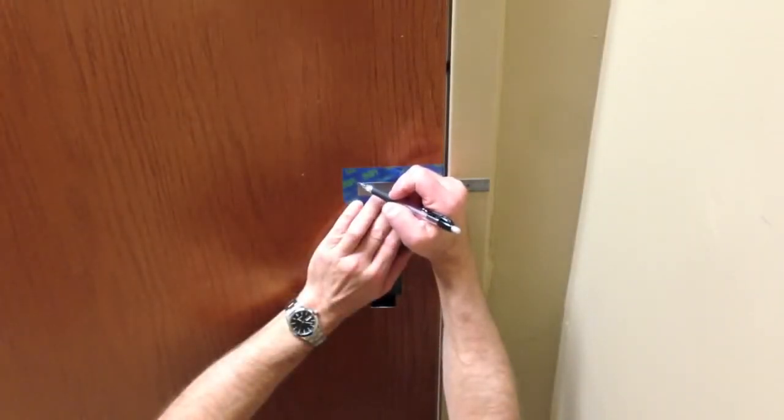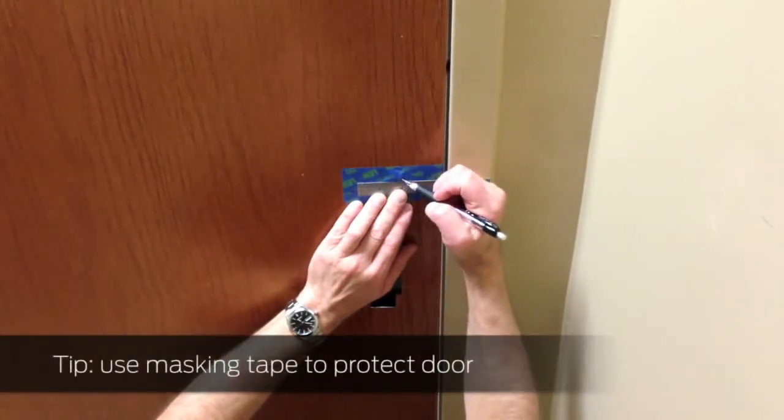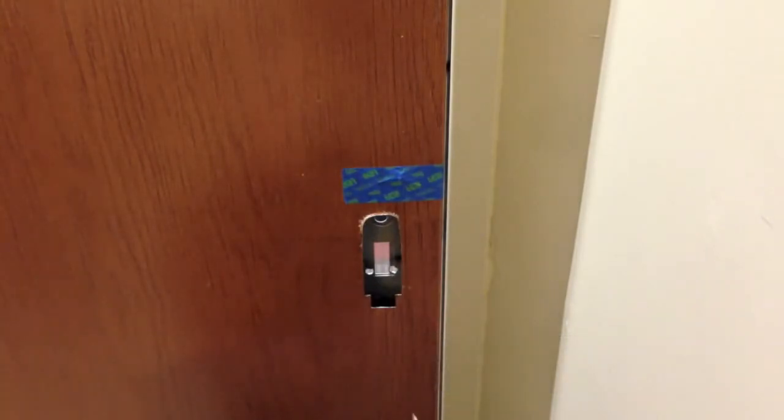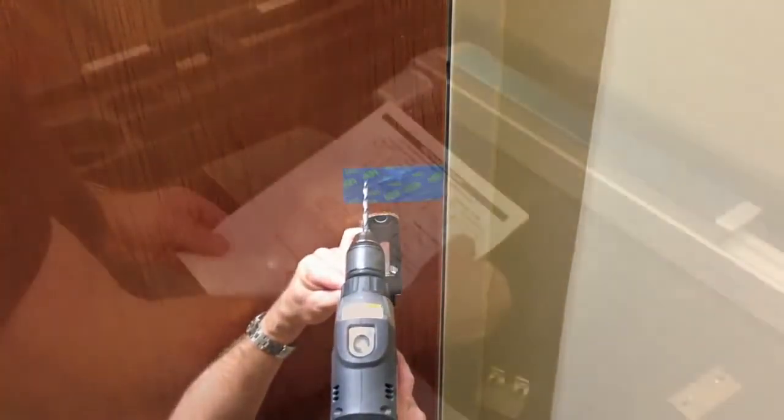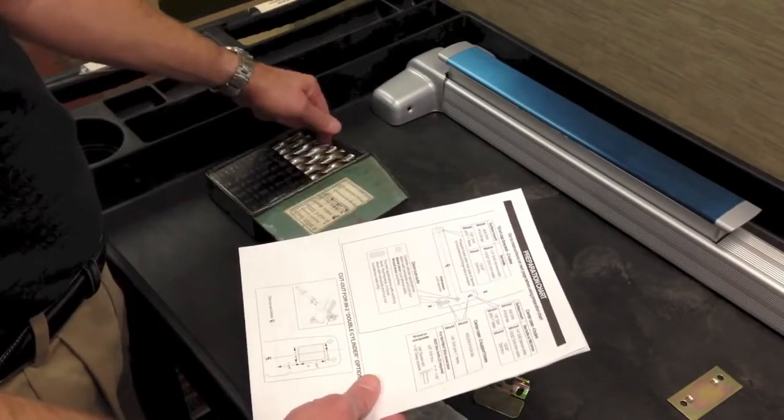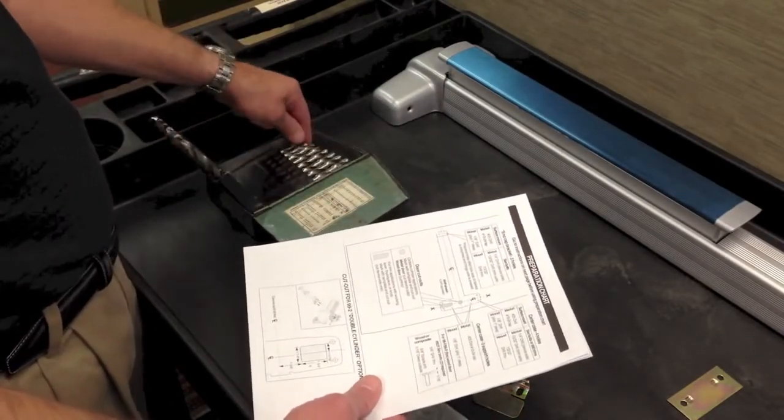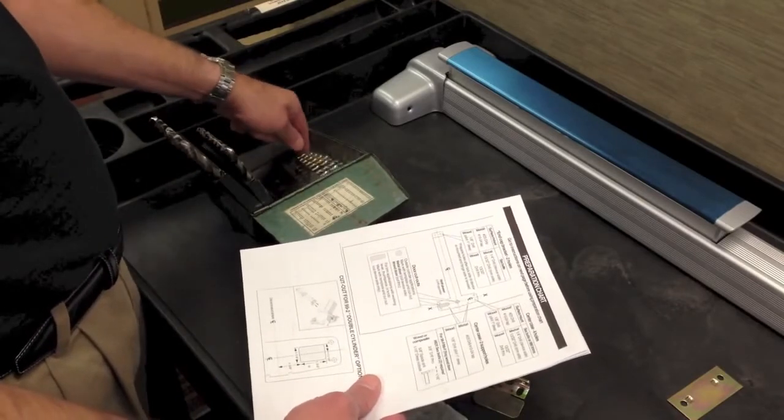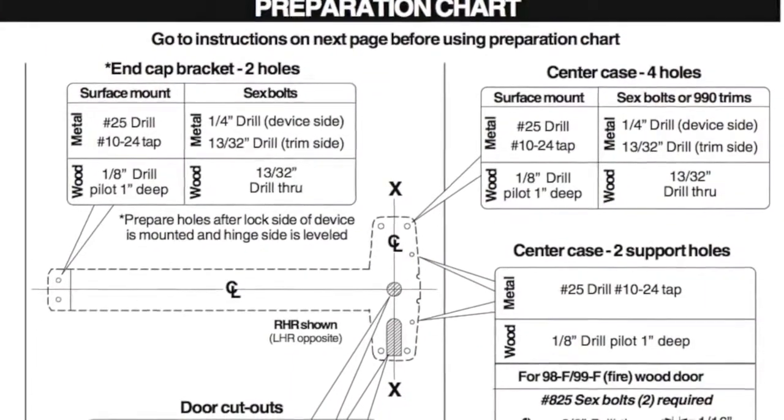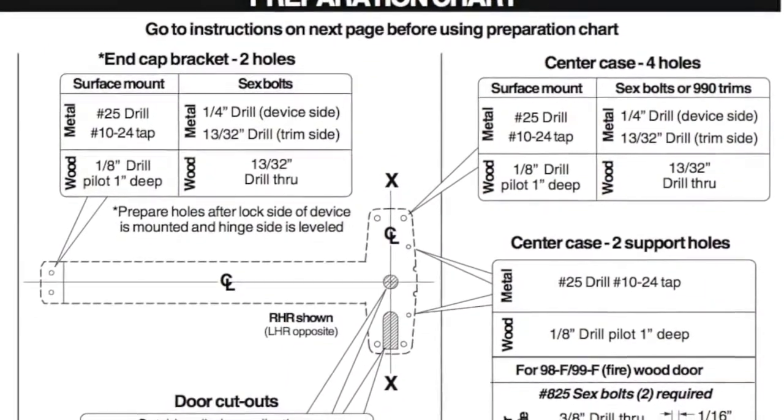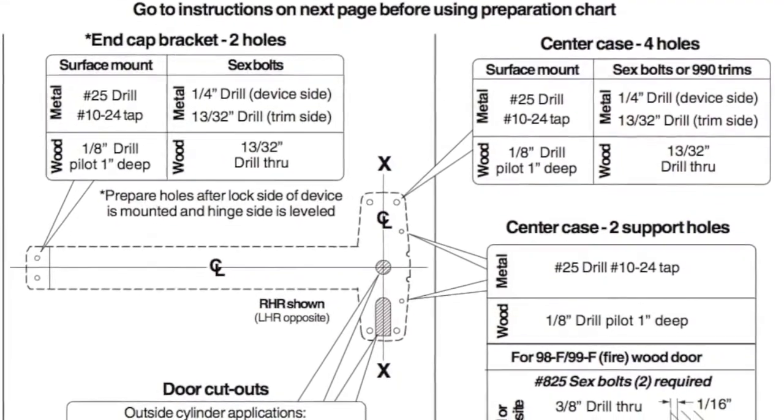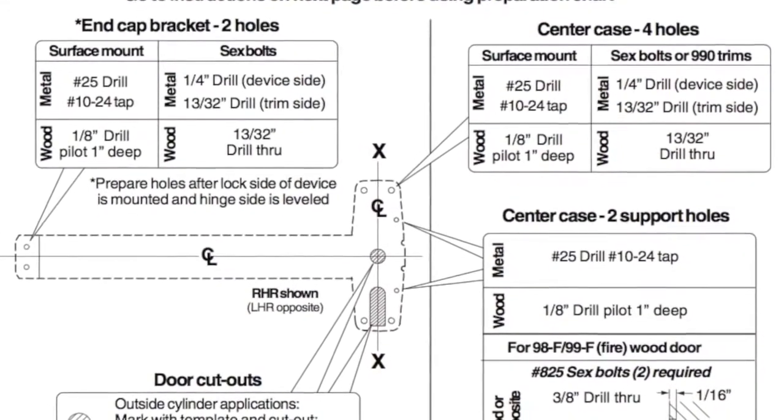Using the trim installation instructions, mark the locations for the two upper mounting holes and drill the holes with the specified bit. Use the preparation chart on page 3 to determine the drill bits and depth of holes for center case and trim. Drill the six holes for the center case. The holes to be drilled vary depending on door and trim type. This chart, found in the installation instructions, can be used to ensure the holes are drilled properly.